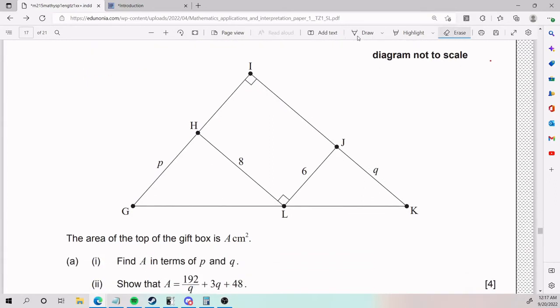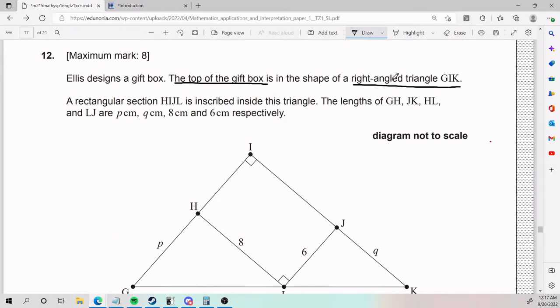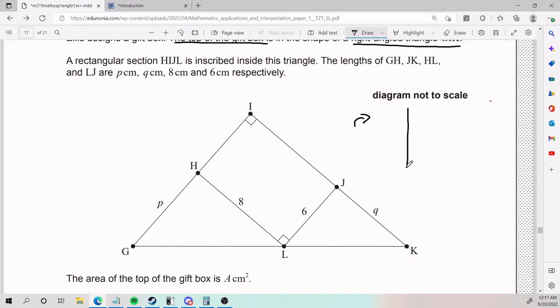They tell us that the top of the gift box is in the shape of the right-angled triangle GIK. So this whole guy is the top of the gift box. Read carefully. Anyways, so for part A, part I, we are talking about a right-angled triangle. And so this is a little bit hard to visualize. But as a right-angled triangle, this actually looks like this. I'm going to make it stand up straight.